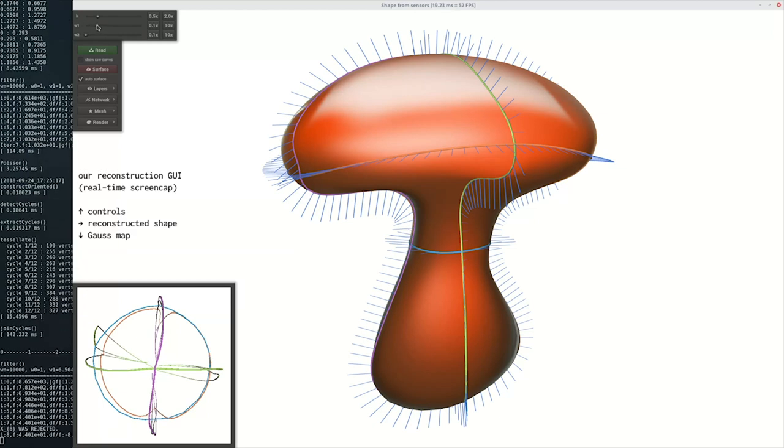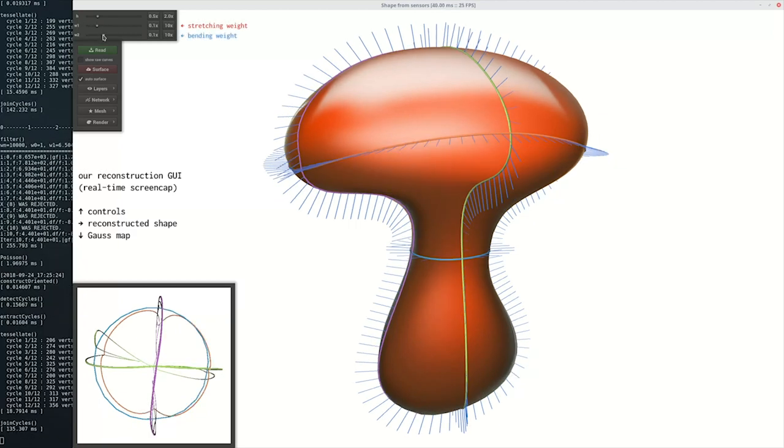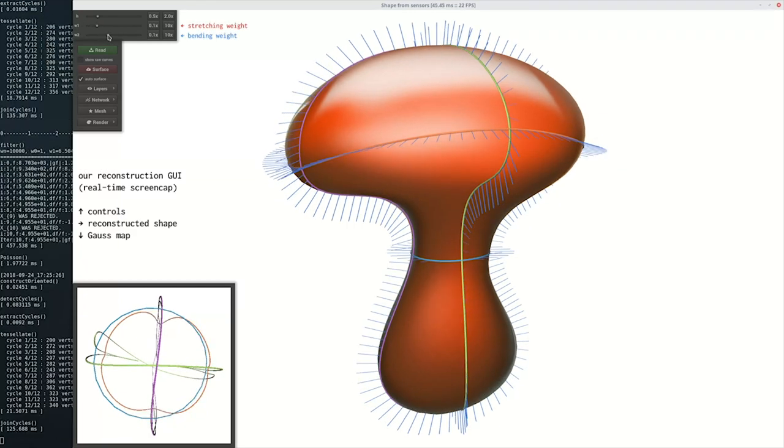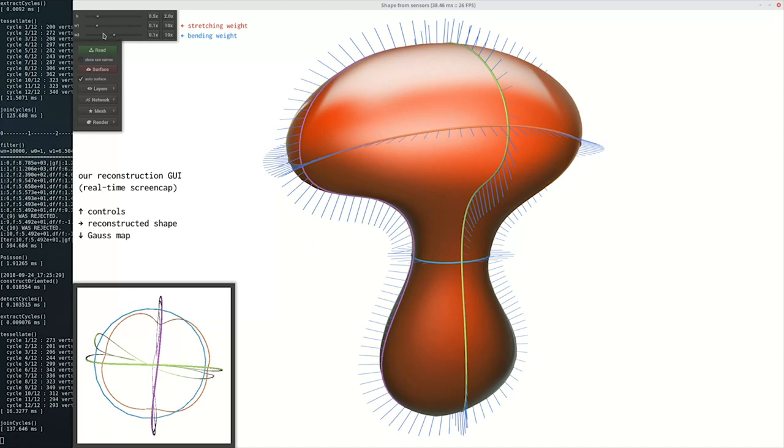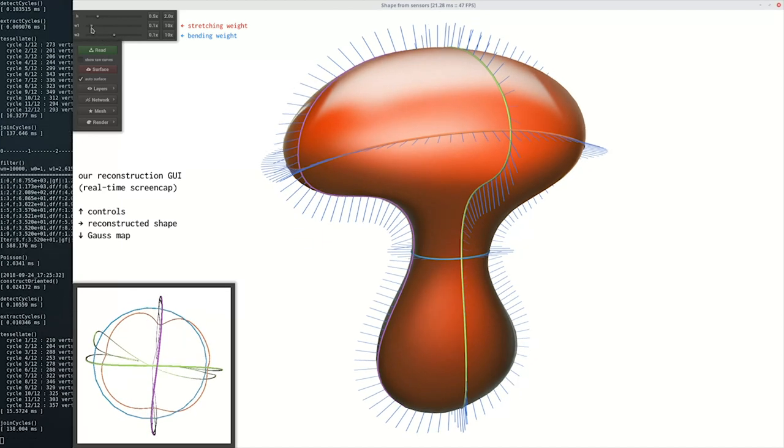The algorithms run at interactive rates due to our use of discrete representation of the geometry. The user can tweak the weights and instantly see how the reconstructed surface changes.